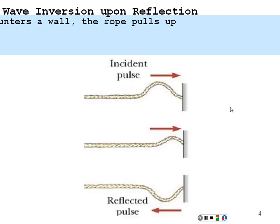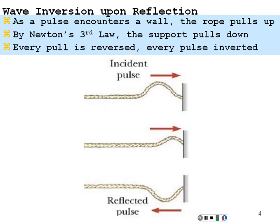We could get this kind of effect where two waves are interfering with each other by a string being tied to a rigid support. As the string pulse comes in, the tension in the string will be pulling on the string and on the support tangentially. As the string encounters the support, there will be a pull of tension on the support, and according to Newton's third law, for every action there's an equal and opposite reaction — the support will pull back 180 degrees in the opposite direction. So the reflected pulse is exactly 180 degrees opposite in every way from the incident pulse coming into the wall.